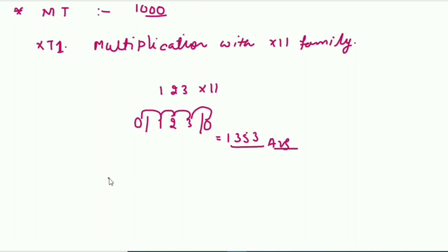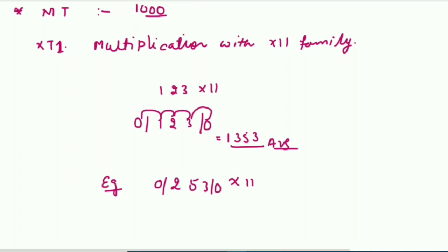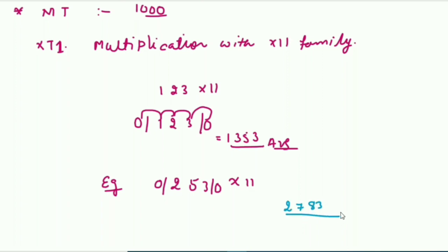Let me take one more example: 253 multiplied by 11. Place zeros on each side, then add subsequently. Zero plus three is three, three plus five is eight, five plus two is seven, two plus zero is two. So the answer is 2783.